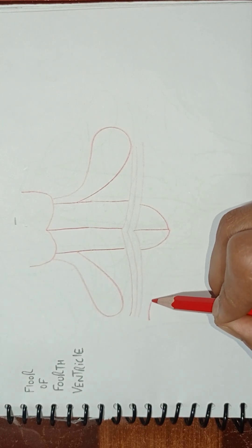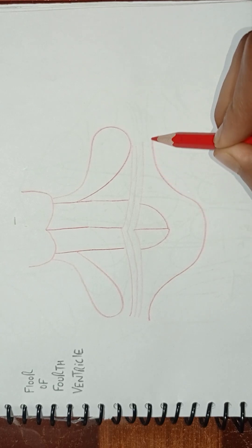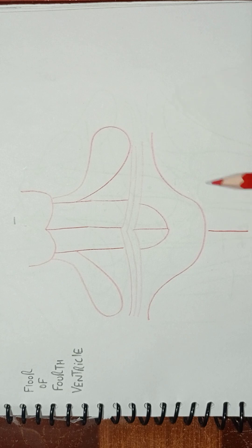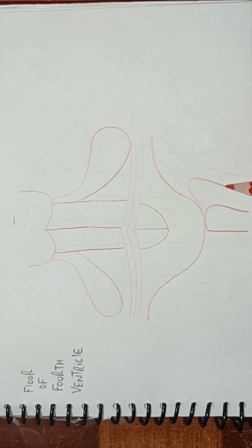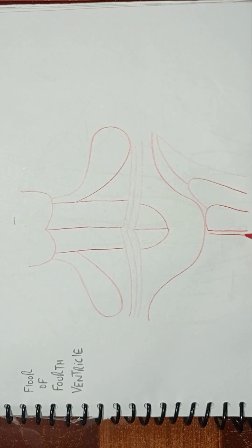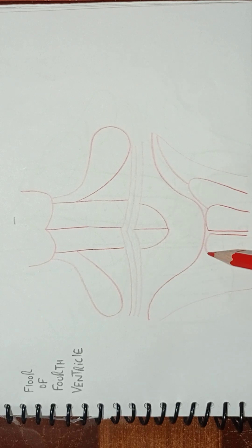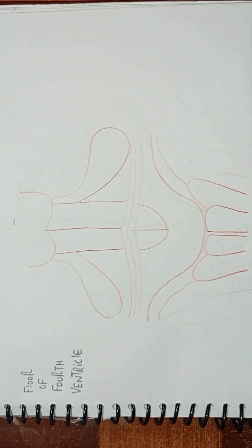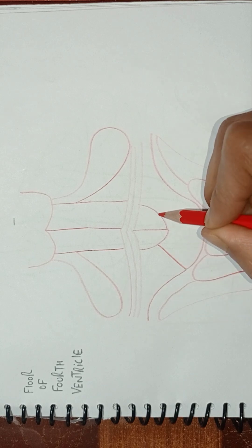We will draw another line from here that goes like this, and another line here. From this line, we will draw three structures: this is the first structure, this is the second structure, and this is the third structure. Similarly, from here, we will draw three similar structures — first, second, and third. This is the floor of the fourth ventricle. We have to draw two more lines: one and two.